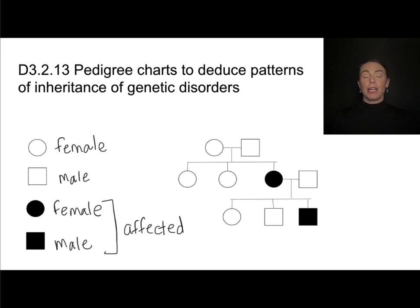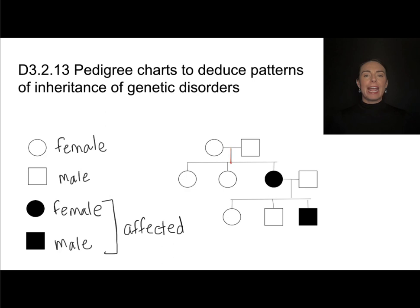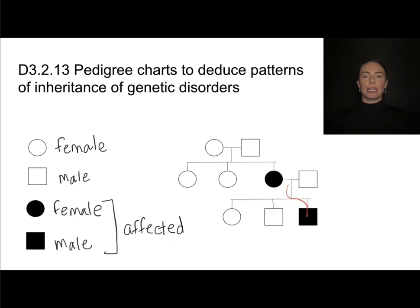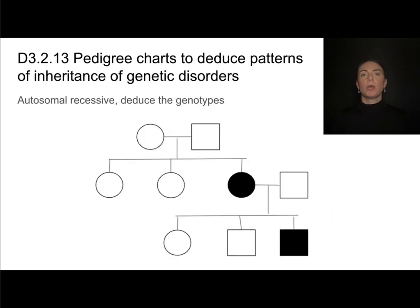A horizontal line on a pedigree chart denotes a mating pair — I'll shorten that to marriage — and anything directly descending from the vertical line denotes an offspring. For example, this female and this male had three children: all girls, one of whom had the disease. This affected daughter married a male that does not have the disease, and they had three children — two boys and one girl — and one of their male children had the disease.